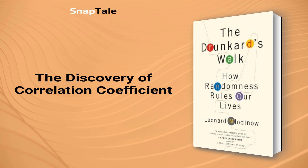The Discovery of the Correlation Coefficient: Francis Galton, a mathematician and a cousin of Charles Darwin, was fascinated with measurements. He observed that the height of children and their parents was related, which led to his discovery of the correlation coefficient. The coefficient describes the degree of correlation between two variables and is a vital concept in statistics. A positive correlation means that the taller the parents, the taller the children. Galton's discovery helped mathematically prove the relationship between variables and paved the way for future statistical research.